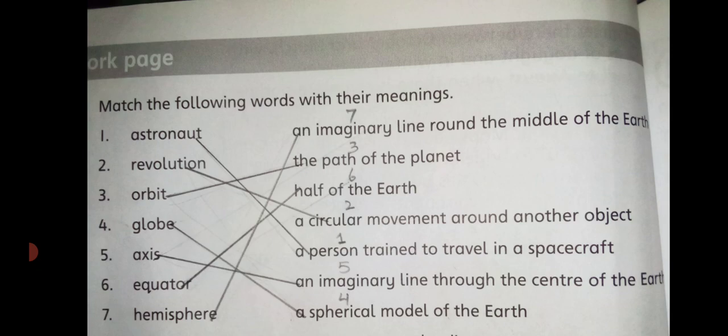Axis is an imaginary line through the center of the Earth — that imaginary past line is the axis. Number 6, the word is Equator. You have to match it with: half of the Earth. And the last word of this question is Hemisphere. Hemisphere means an imaginary line around the middle of the Earth. This is called the hemisphere.